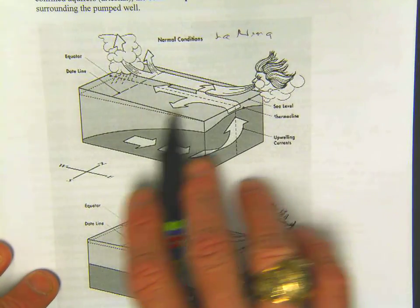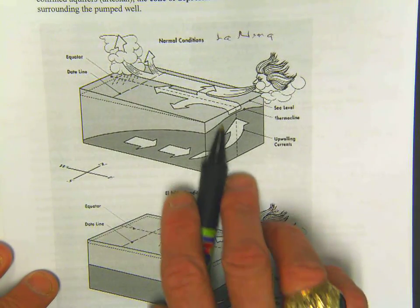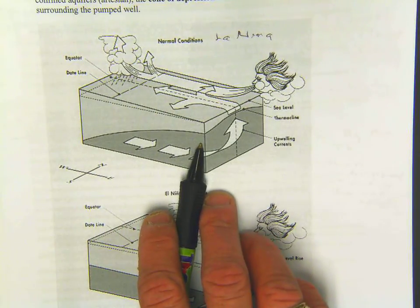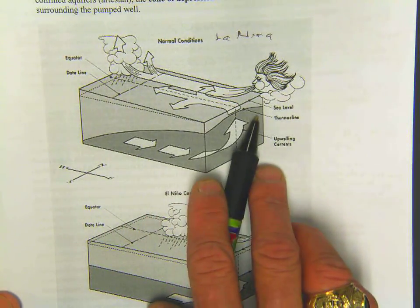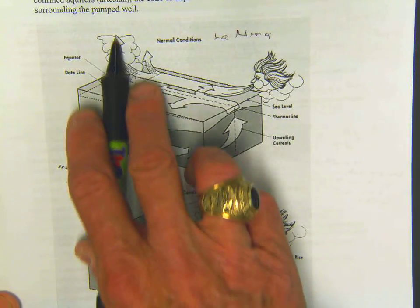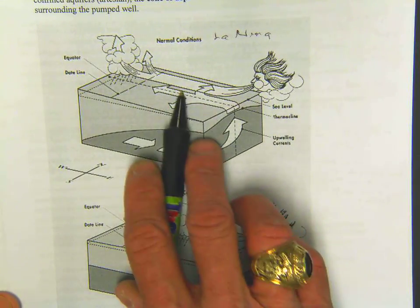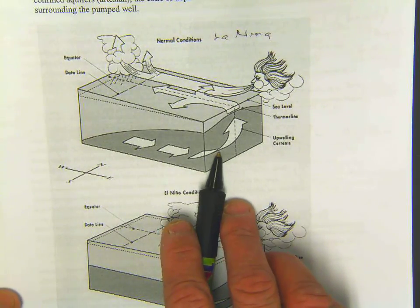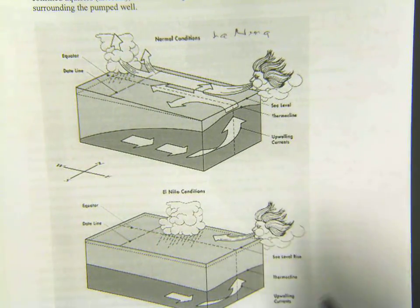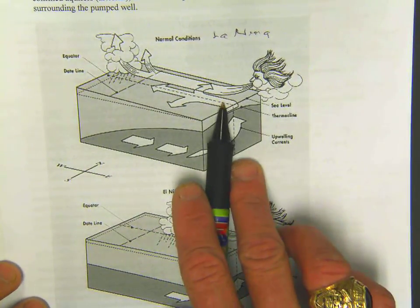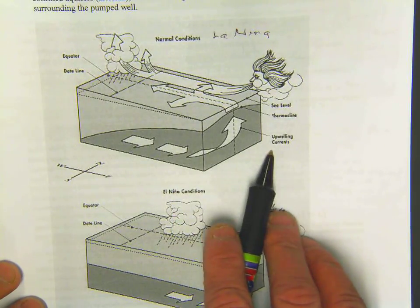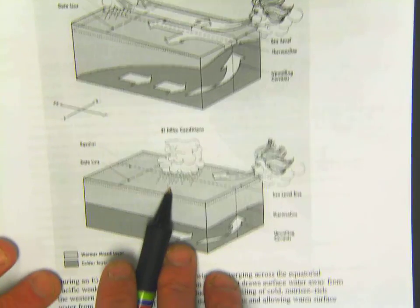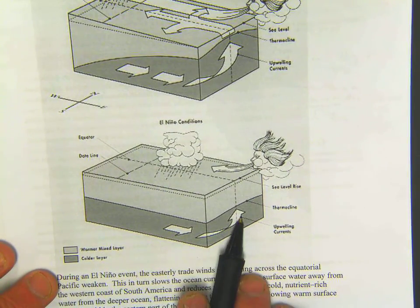You can see the ocean conveyor belt, where the ocean is constantly moving. The circulation of the air moves currents and transfers heat, allowing normal precipitation. Here's the upwelling area and currents. But what happens in El Niño is you lose this upwelling.